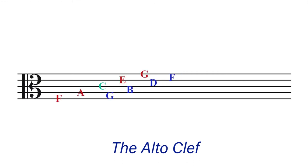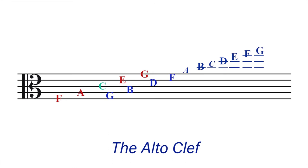Recall that the fifth line of the alto clef is G. That makes the space above the alto clef A. The first ledger line will be B, the space above the first ledger line will be C, the second ledger line will be D, the space above the second ledger line is E, the third ledger line is F, and the space above the third ledger line is G. The fourth ledger line is A.